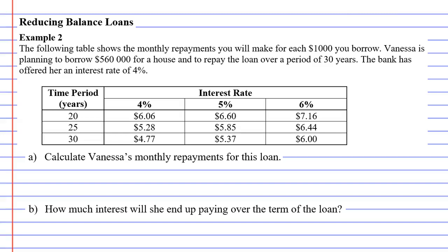In this video, we're going to look at example two. The following table shows the monthly repayments you will make for each $1,000 you borrow. We've got to underline that — it's very important. It's only for each $1,000 you borrow, and we'll talk more about that later.